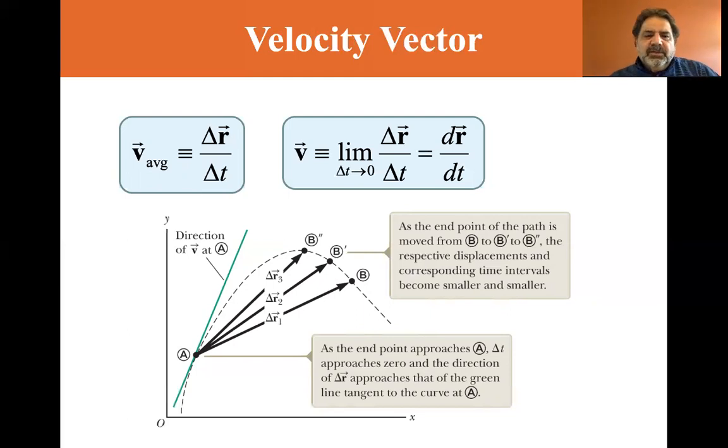As you decrease delta R, you'll get the slope of the velocity, which is the slope of the line there at position A. So the speed, the magnitude, the absolute value sign there around the V vector is just the velocity, the magnitude of the velocity where you don't take into consideration the direction.